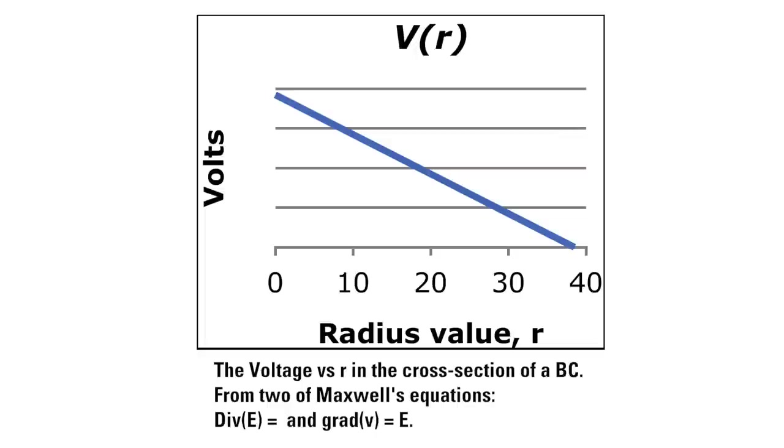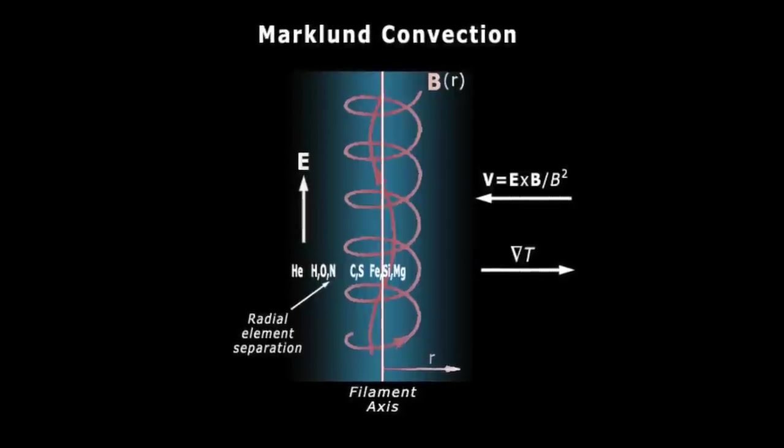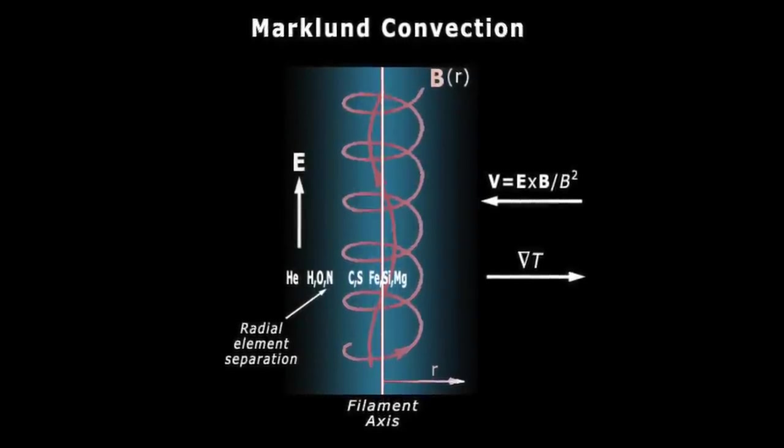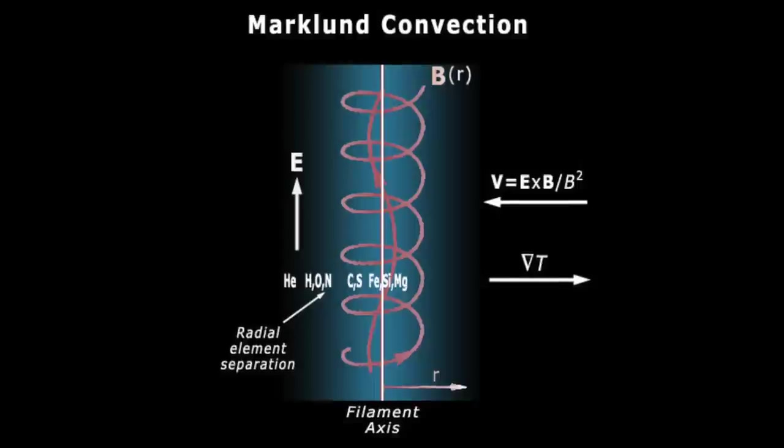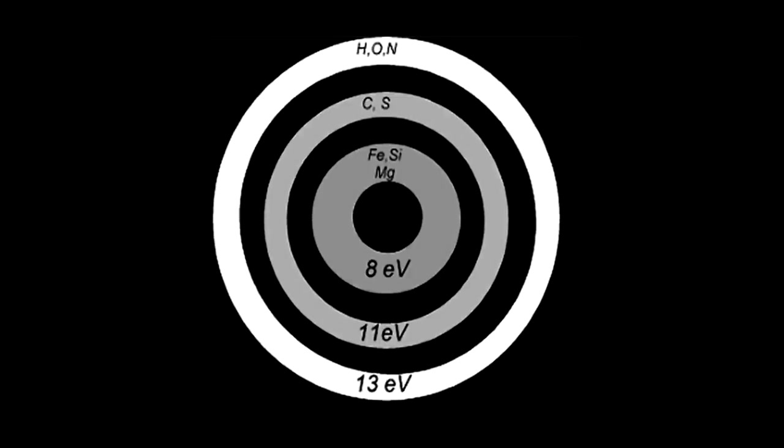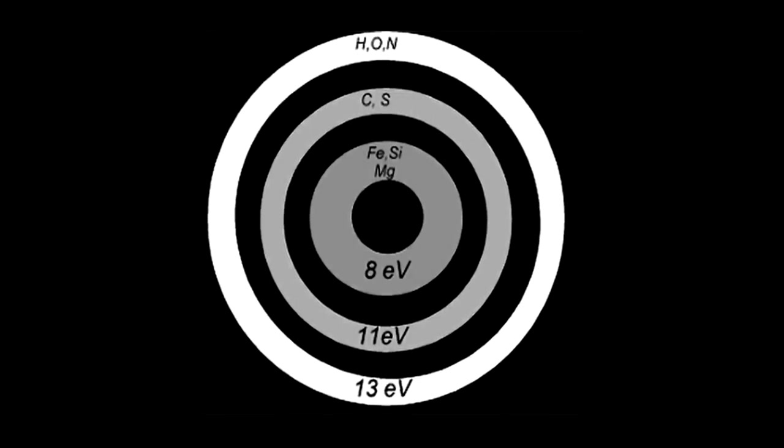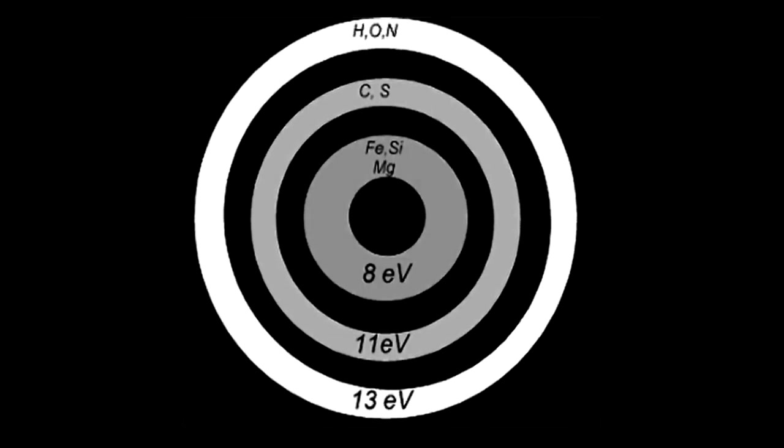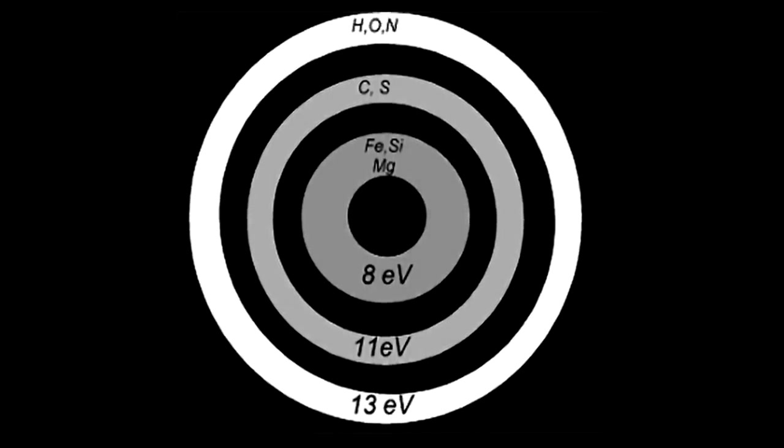But so what? What's Marklund convection? Well, in Marklund convection, a process that occurs in a Birkeland current, atoms of the various elements present are sorted according to their so-called ionization potential. This results in the easily ionized, heavier atomic weight elements such as iron being found at the center of the filament.